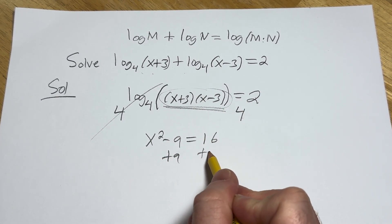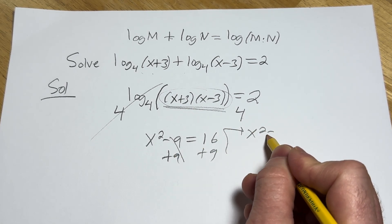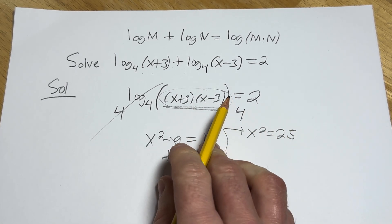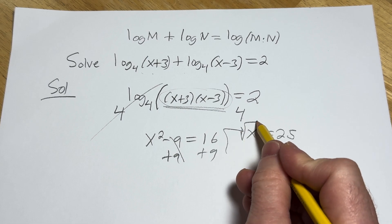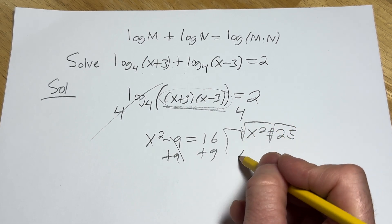If we add the 9 to both sides, we get x squared equals 25. And then when you take the square root, you get x equals plus or minus 5.